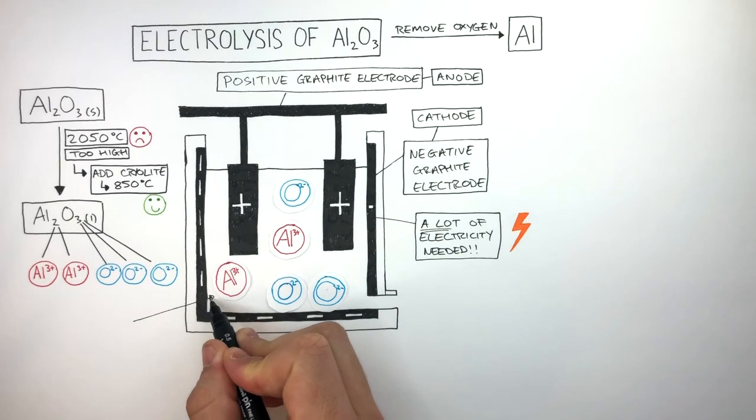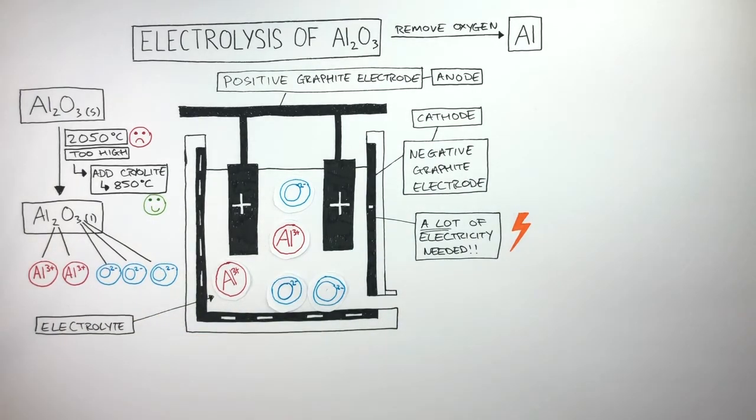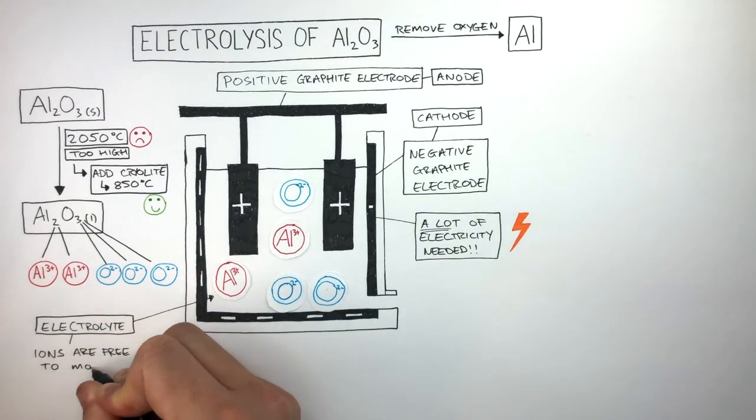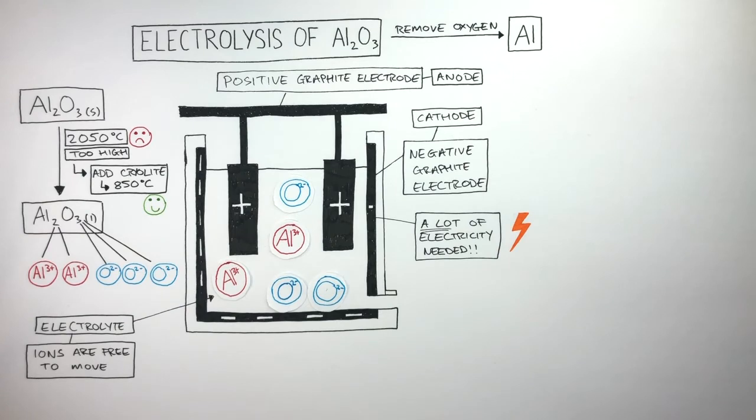Inside the cell is the electrolyte. The electrolyte is the ionic compound being broken down by electricity. The ions are free to move as the electrolyte in this case is molten, a very hot liquid.